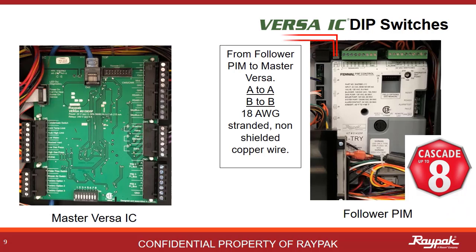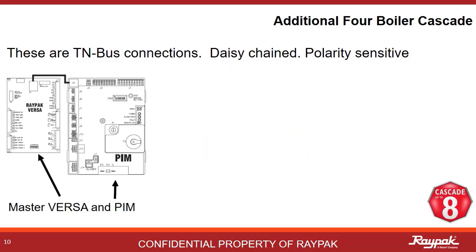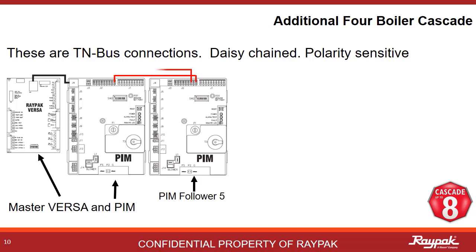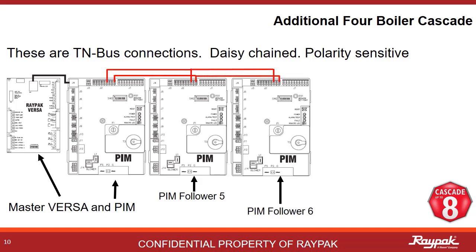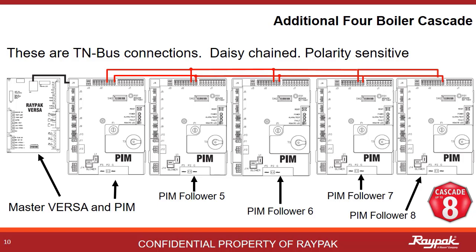The first three followers connect from each follower PIM to the master Versa on the FT bus. Always use 18 gauge stranded non-shielded copper wire for these connections. With the new software, four additional follower PIMs can be connected to the master PIM. These four additional followers will be called follower five, six, seven, and eight. They will wire up PIM to PIM in a daisy chain fashion. This connection is called a TN bus.